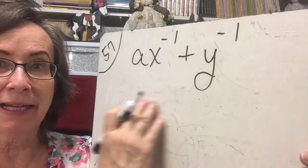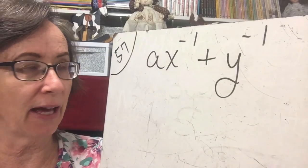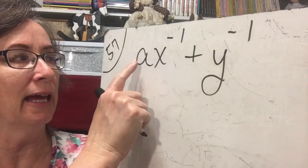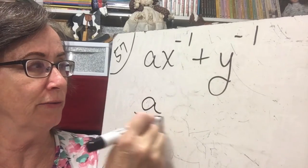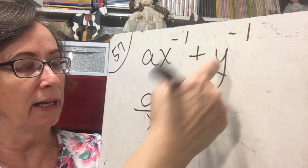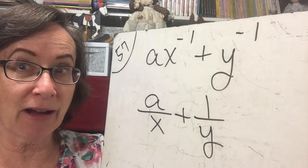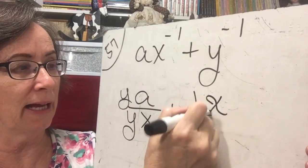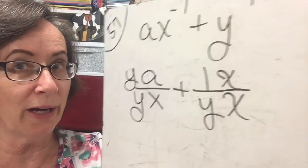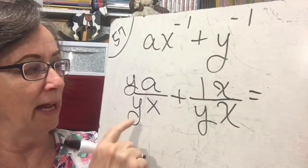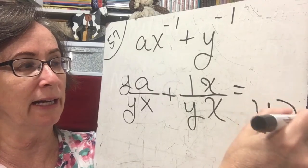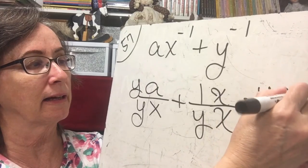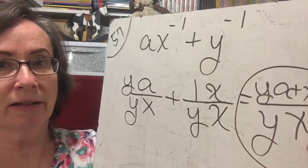We have an expression that is not simplified, but we can rewrite it as rational expression. So we can say a times x to the negative 1 is a over x plus 1 over y and then we get a common denominator which means I need to make this a y over y and this one an x over x. Remember when I multiply by 1 I change nothing.